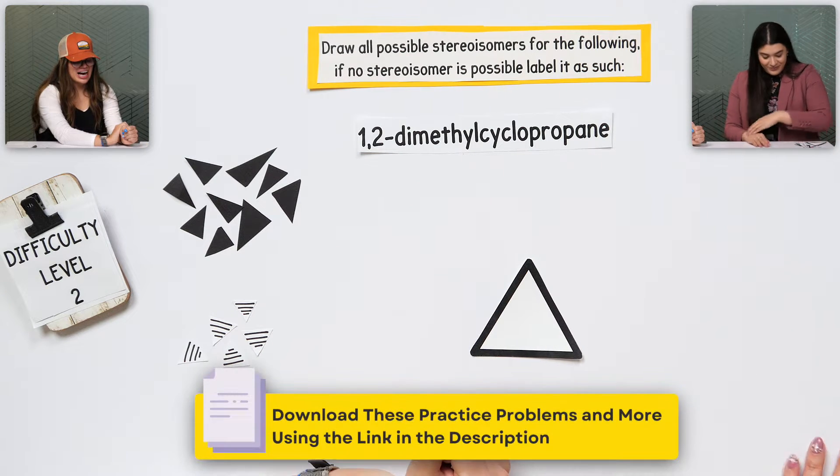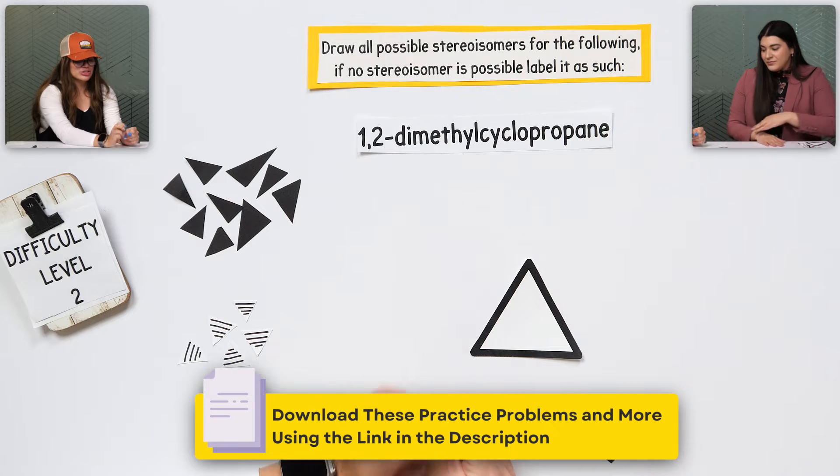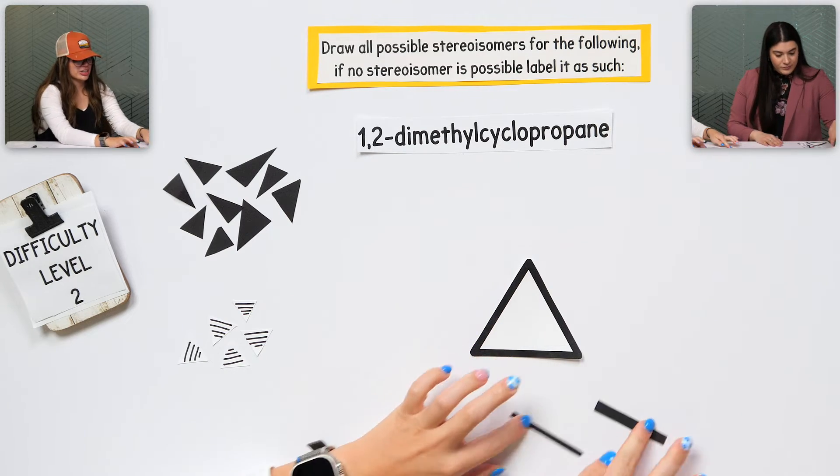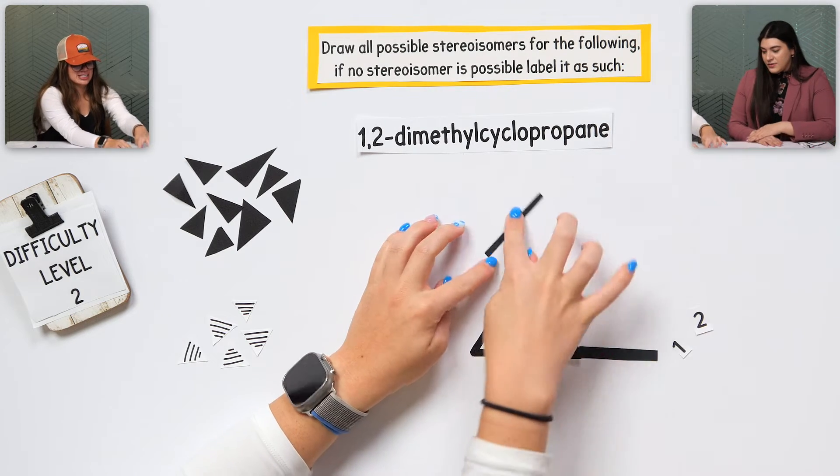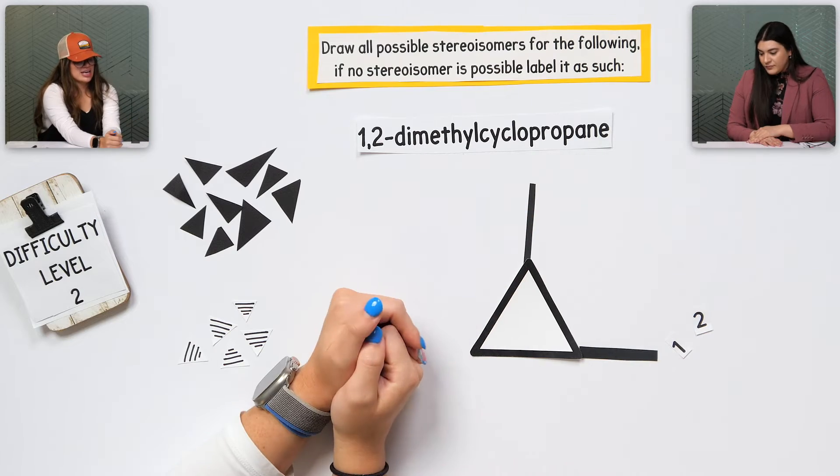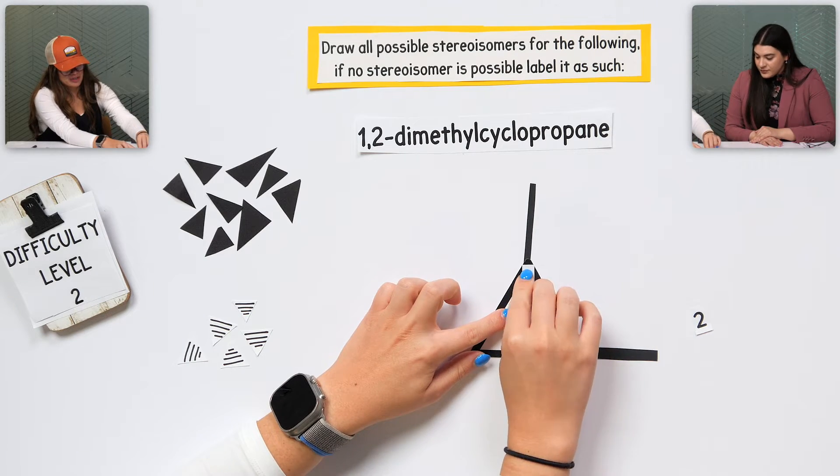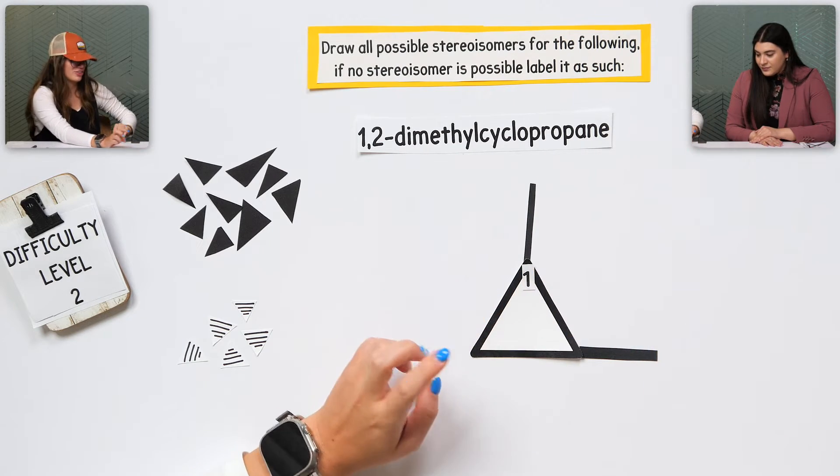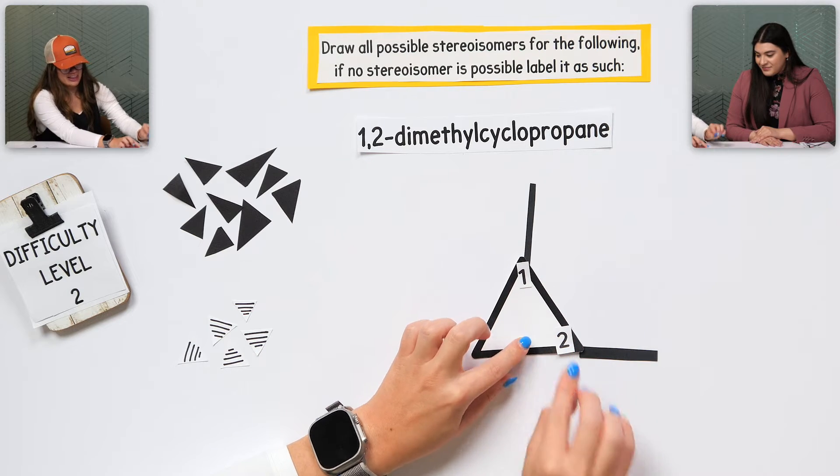And then I have dimethyl, so I have two methyl groups coming from the one and the two. Okay. First, the one and the two. And I'm going to label it one, two, so my substituents are at the lowest. Good. Like that.